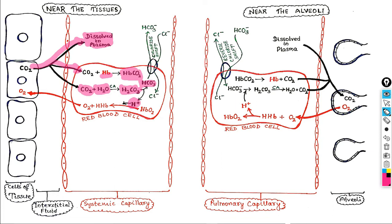Now listen carefully: if this hydrogen ion is left here, it will disturb the pH and make the surroundings acidic. So these protons must be settled somewhere. This responsibility is carried out by hemoglobin. Hemoglobin consists of two parts — heme and globin. The globin part is its protein portion, consisting of four polypeptide chains: two alpha chains and two beta chains.